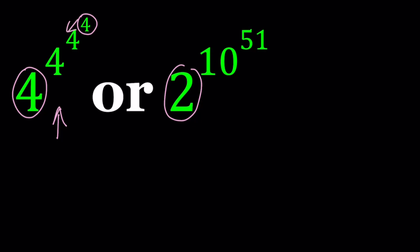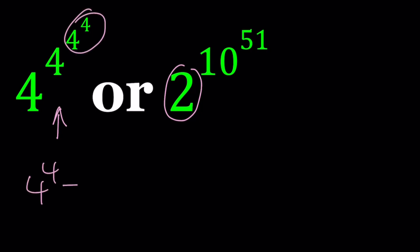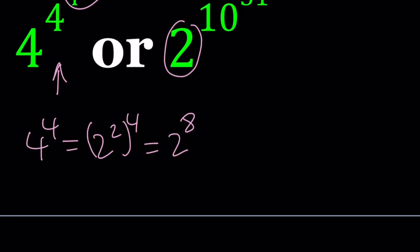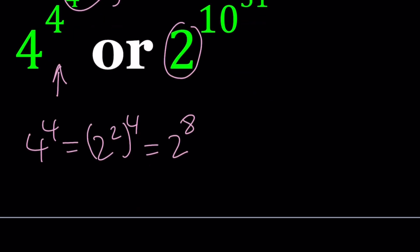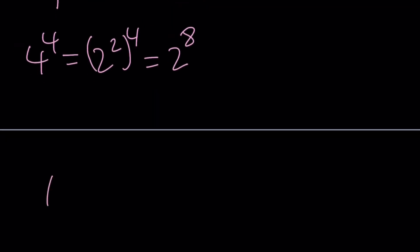The first exponent we're going to deal with is 4 to the 4th power. So let's start with that. 4 to the 4th power can be written as 2 squared to the 4th, and that is the same thing as 2 to the power 8. So now I'm going to replace this with 2 to the 8th, giving me 4 to the power 4 to the power 2 to the power 8.